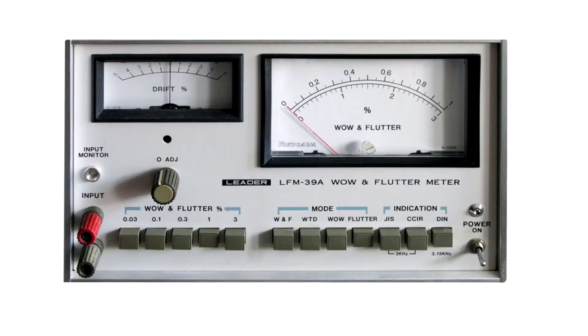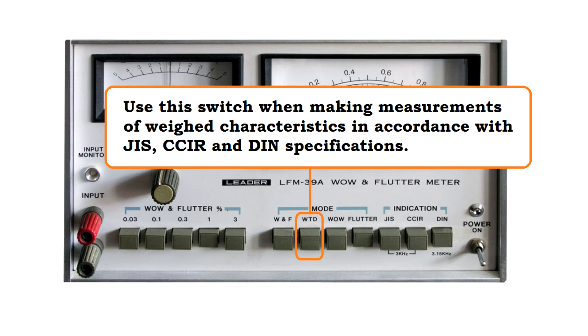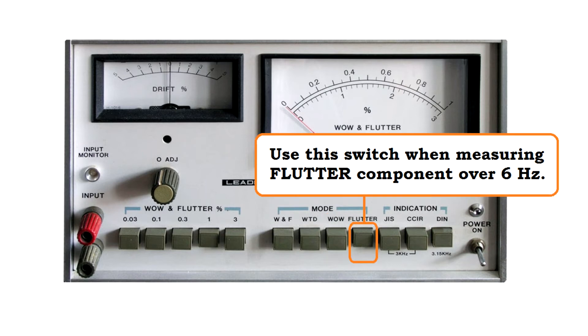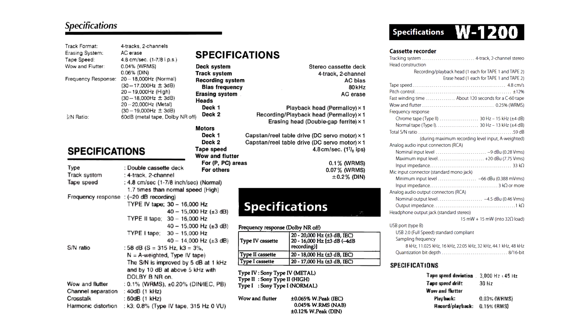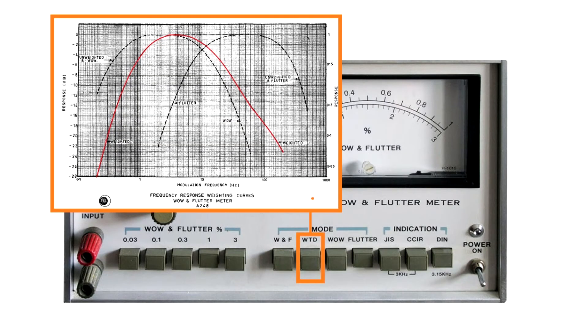Before the digital age, Wow and Flutter were measured using analog meters, like this LIDAR LFM39A. Its mode buttons are described as follows: use this switch when measuring overall Wow and Flutter components; use this switch when making measurements of weighted characteristics in according with JIS, CCIR and DIN specifications; use this switch when measuring Wow components up to 6Hz; use this switch when measuring Flutter component over 6Hz. If you want to measure the same parameter that is usually provided in technical specifications of cassette decks and record players, we need to use WTD, not W&F.